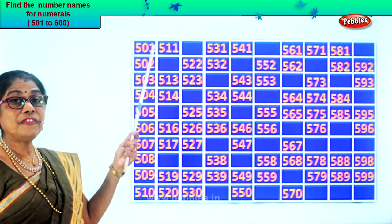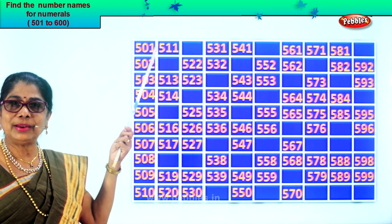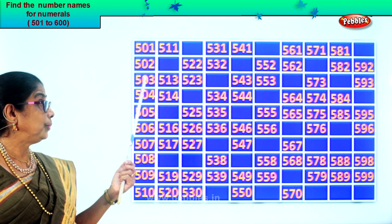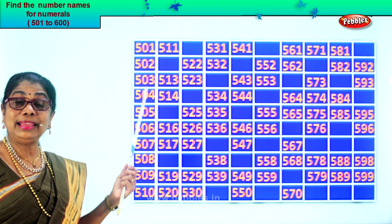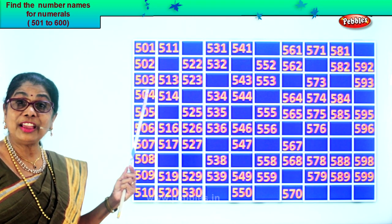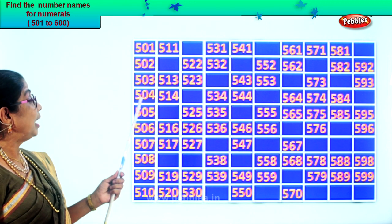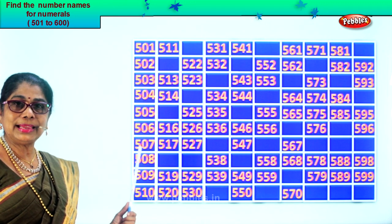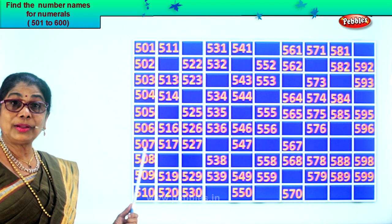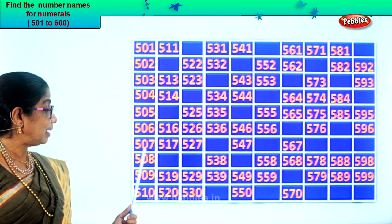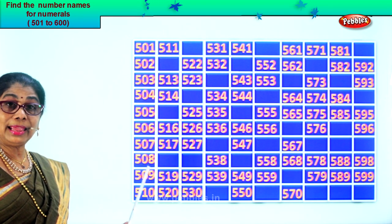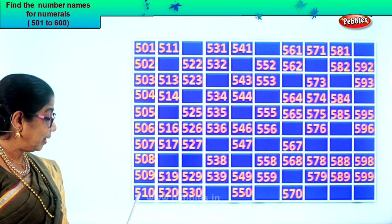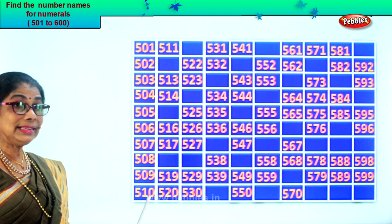Let's read aloud together: five hundred and one, five hundred and two, five hundred and three, five hundred and four, five hundred and five, five hundred and six, five hundred and seven, five hundred and eight, five hundred and nine, five hundred and ten.